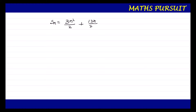We can very easily solve this type of question. What are the requirements here? The question asks us to find the 25th term, meaning we are going to find the value for A25. That is our ultimate goal. In order to find A25, we are going to calculate A1, S25, and S1. After calculating these, we will finally find out A25.